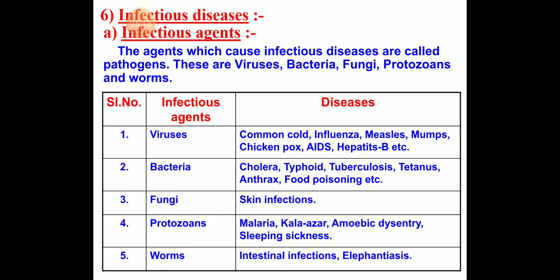Infectious disease and infectious agents: The agents which cause infectious disease are called pathogens — these are viruses, bacteria, fungi, protozoa, and worms. Viruses cause diseases like common cold, influenza, measles, mumps, chicken pox, AIDS, and hepatitis B.